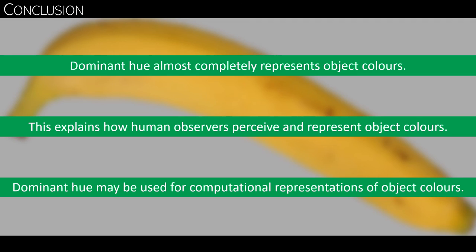These findings also imply that we can simplify the color distribution in all those images by projecting them on their dominant hue. And this may be very useful for computational representations of object colors.